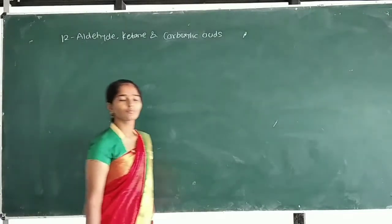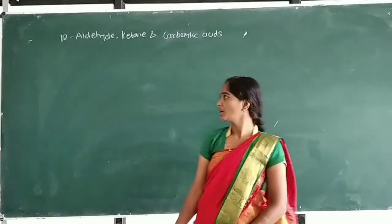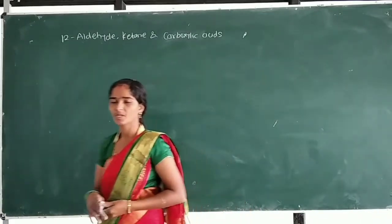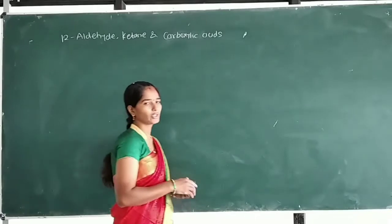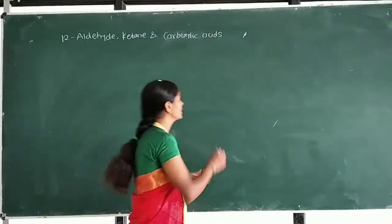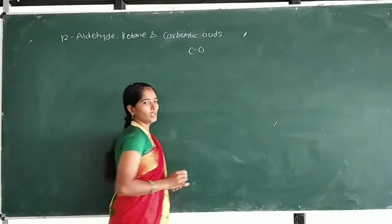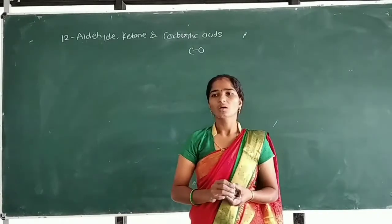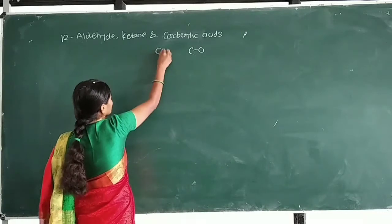Hello students, today we start the chapter on aldehydes, ketones, and carboxylic acids. In the last chapter on alcohols, phenols, and ethers, we saw compounds containing a carbon-oxygen single bond. In this chapter, we learn about compounds containing a carbon-oxygen double bond.